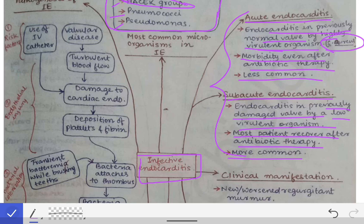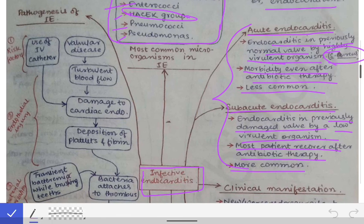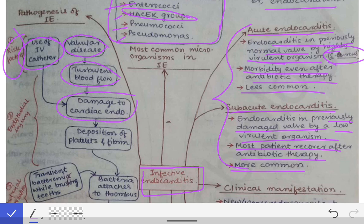Now we will see the pathogenesis of infective endocarditis. The risk factors are valvular disease and the use of an IV catheter. Valvular disease is a risk factor because it causes turbulent blood flow, which damages the cardiac endothelium. An IV catheter may erode the endocardium of the heart, thereby causing damage to it.